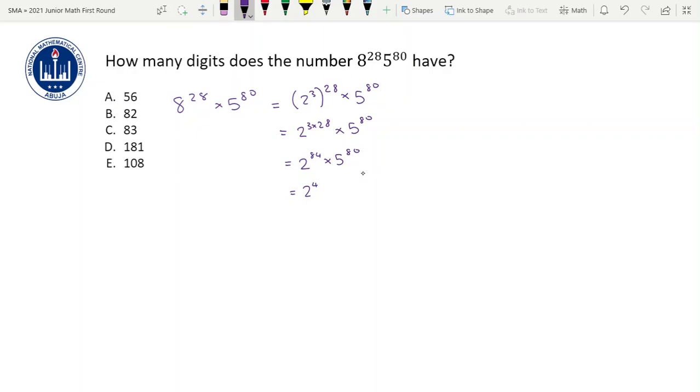So we'll write this as 2 raised to power 4 times 2 raised to power 80 times 5 raised to power 80. And then 2 raised to power 80 times 5 raised to power 80 can be written as 2 raised to power 4 times 2 times 5 raised to power 80, which is 10 raised to power 80. So you'll have 2 raised to power 4 times 10 raised to power 80.